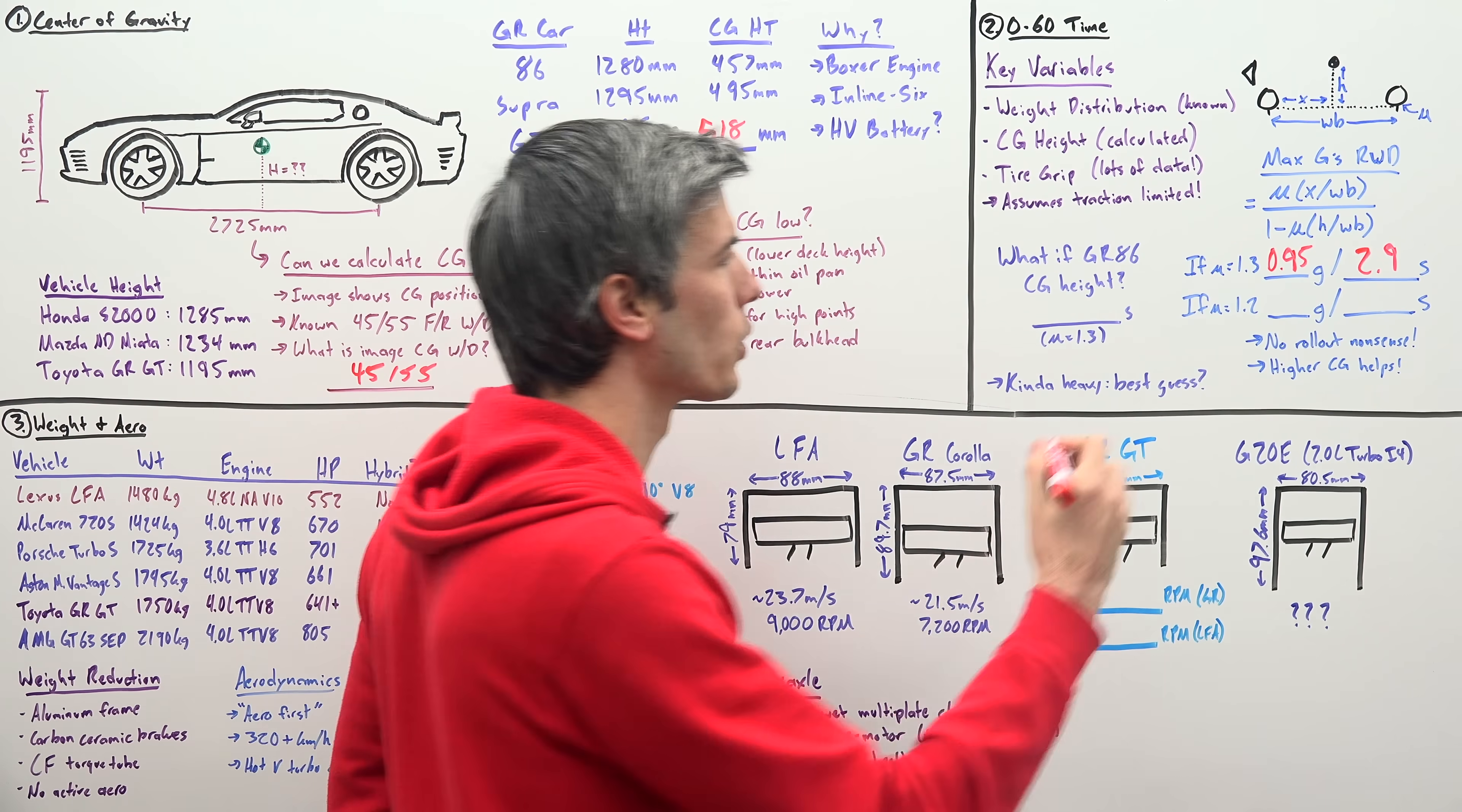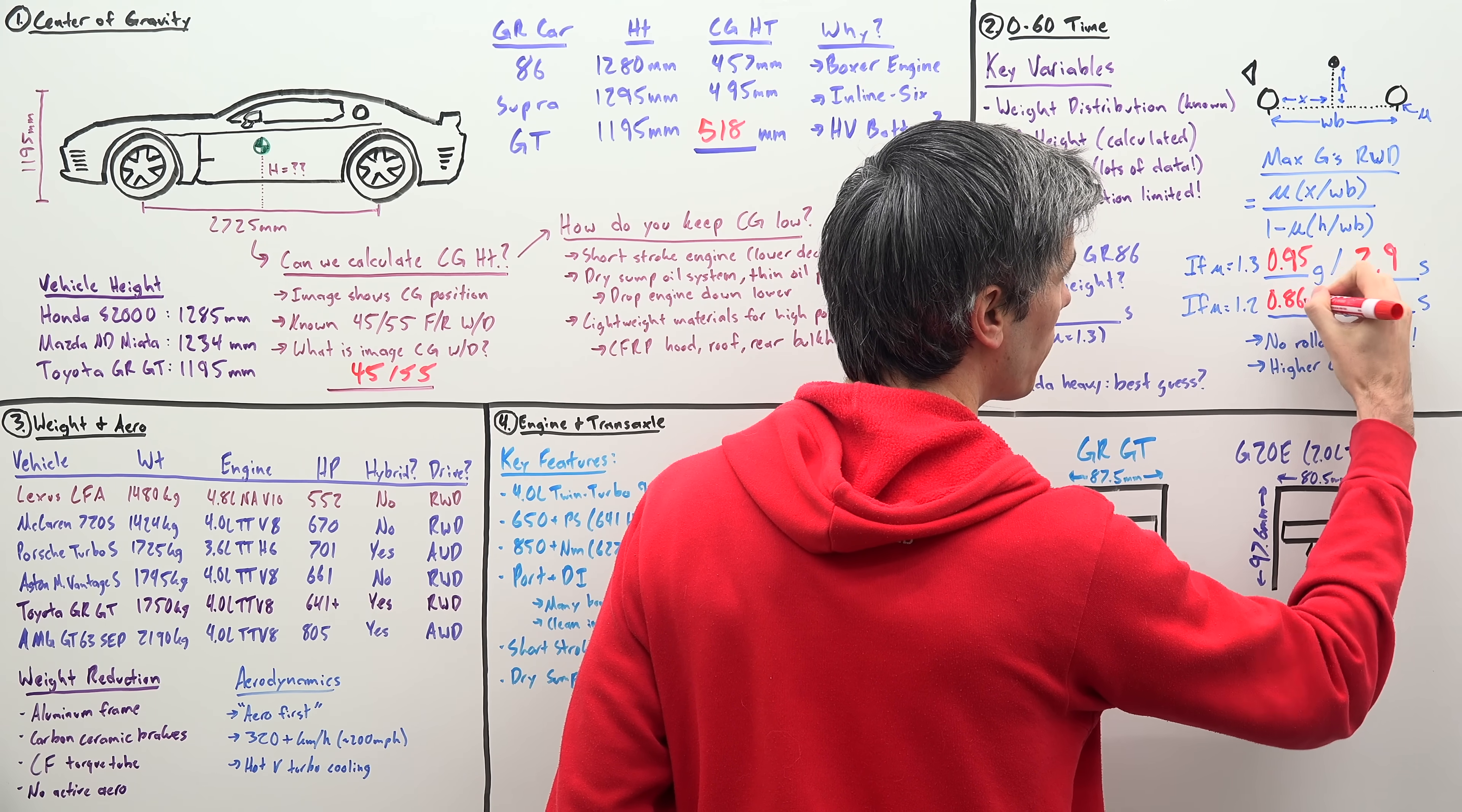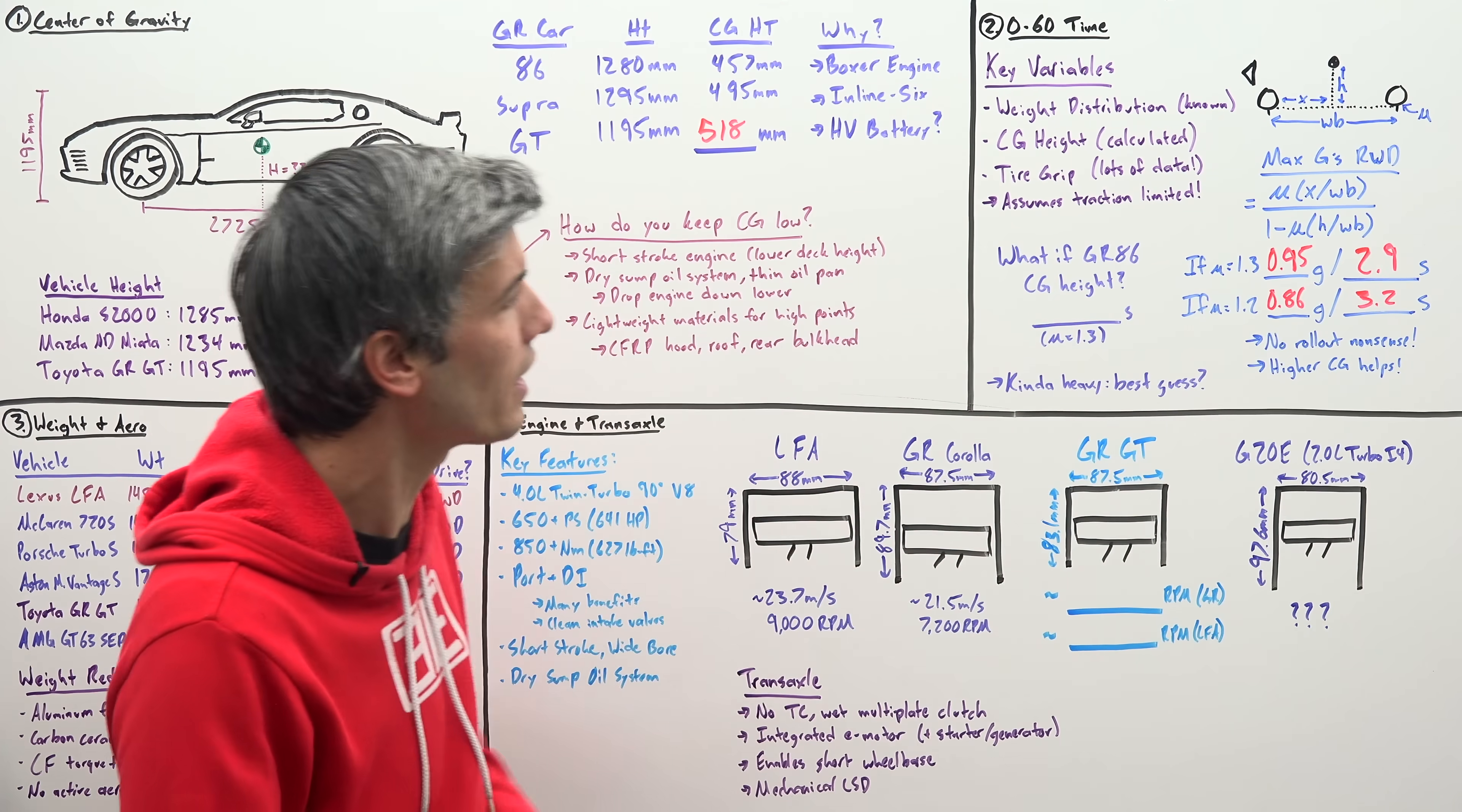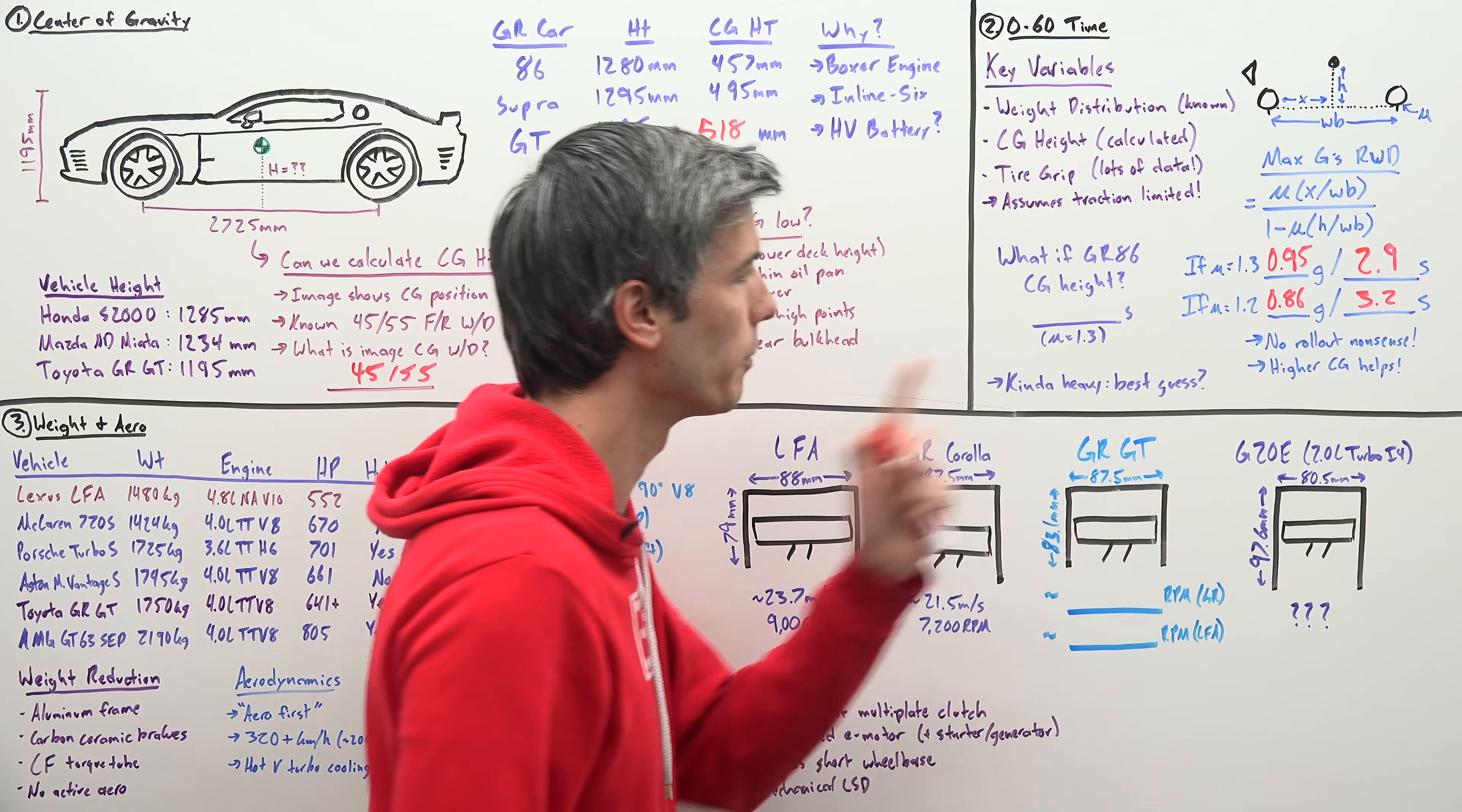Now, if we don't have quite that much grip from our tires, let's say 1.2, well, that gives us an acceleration of 0.86 G's and a 0 to 60 of about 3.2 seconds. By the way, this is not including any rollout nonsense, right? So the big car magazines would delete about 0.2 seconds from each of those times.